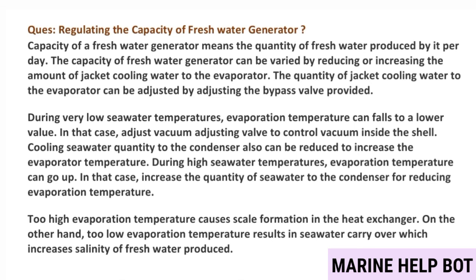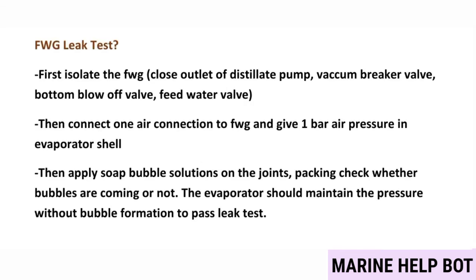Fresh water generator leak test — mostly asked in orals and not available in any book. First, isolate the fresh water generator: close the outlet of the distillate pump, vacuum breaker valve, bottom blow-off valve, and feed water valve. Then connect an air connection to the fresh water generator and apply one bar air pressure in the evaporator shell. Apply soap bubble solution on all joints and packings; check whether bubbles are forming. The evaporator should maintain pressure without bubble formation to pass the leak test.